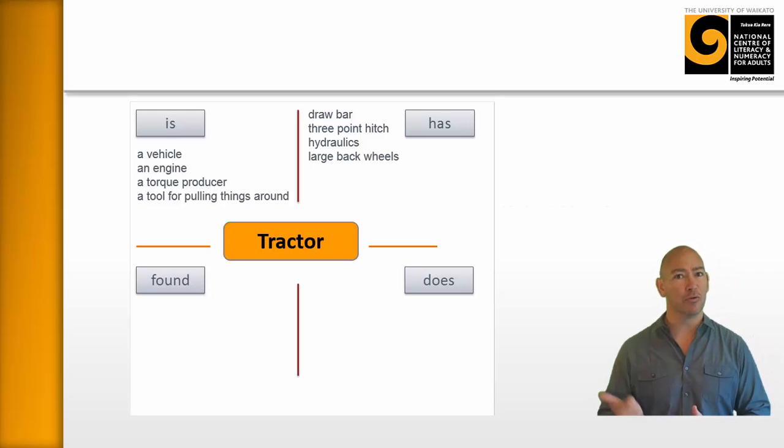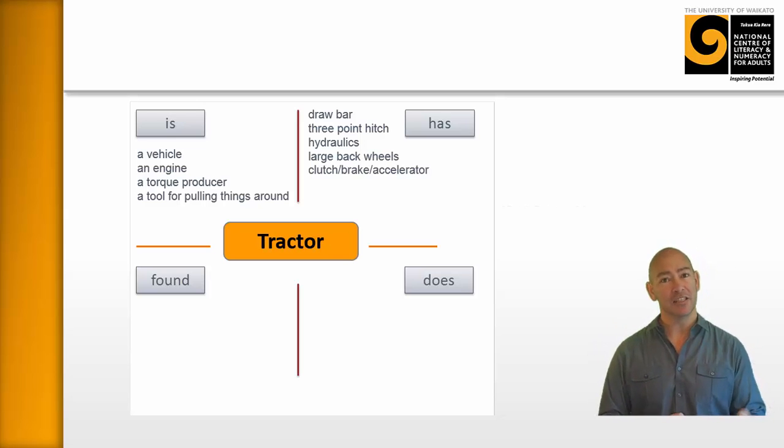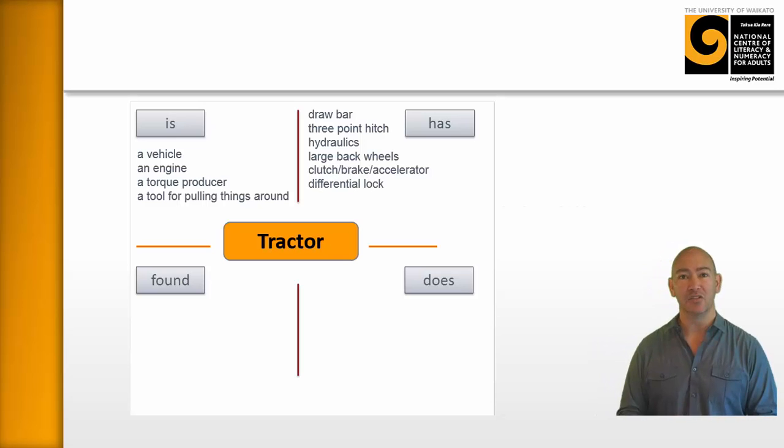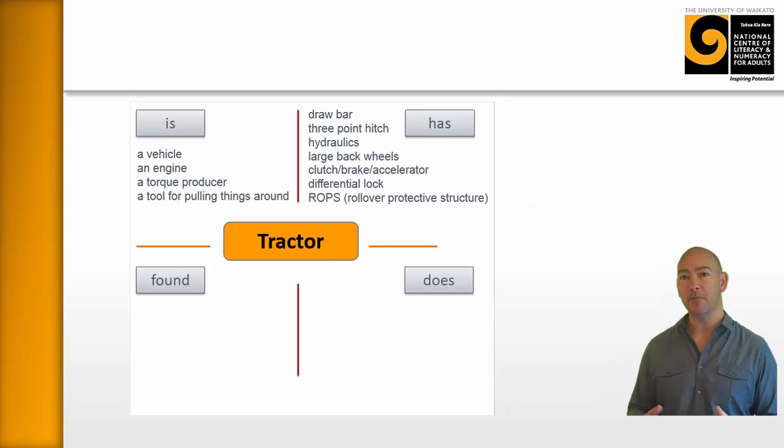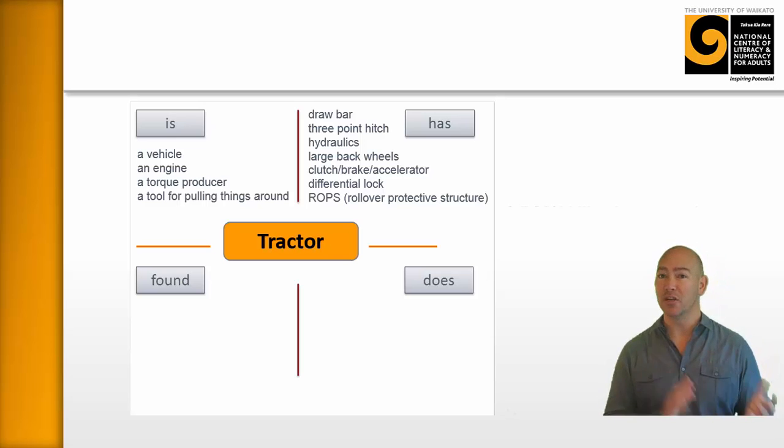It has a clutch brake accelerator. It has a differential lock. It has ROPS, that is in terms of a roll cage to protect people. And it has transmission and horsepower. These are all words that the learners generated on the spot.